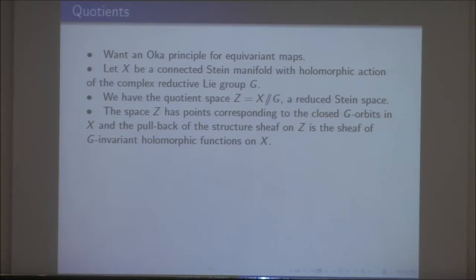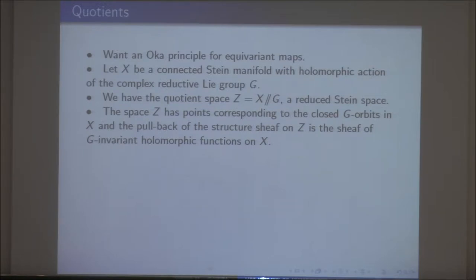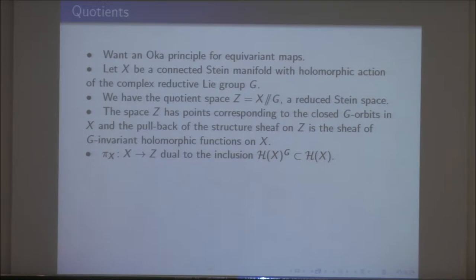The structure sheaf on Z pulls back to the sheaf of germs of G-invariant holomorphic functions on X. There's a mapping from X to Z which is dual to the inclusion: H(X)^G consists of the global functions on Z, and H(X) is the global holomorphic functions on X.